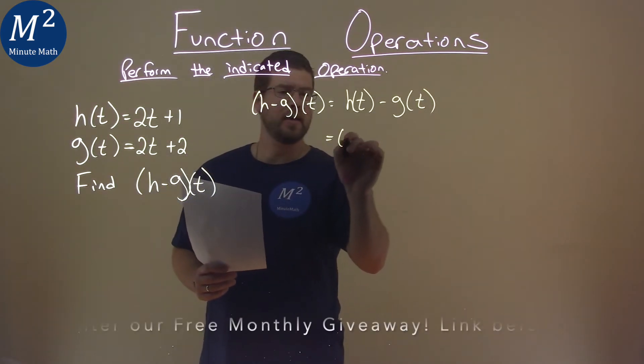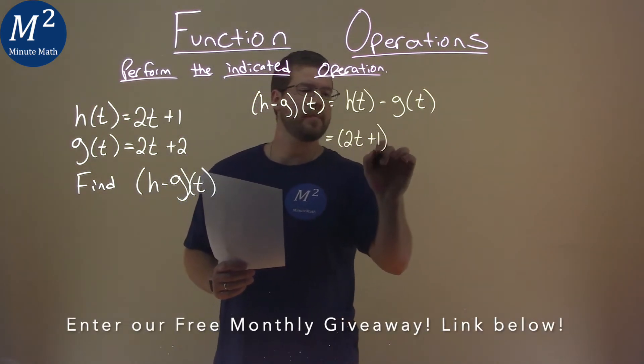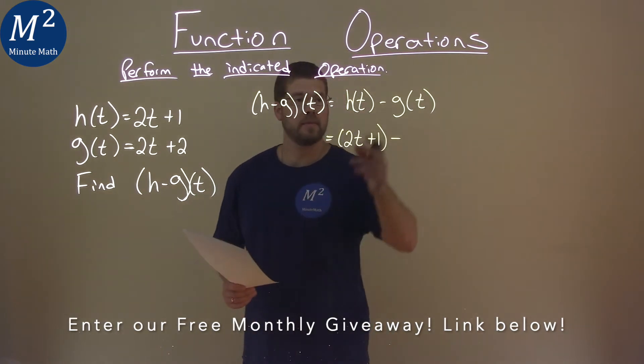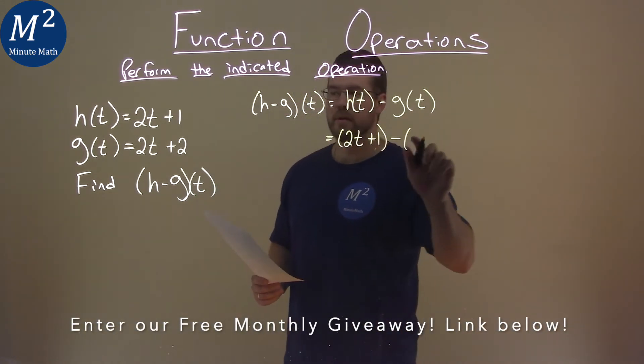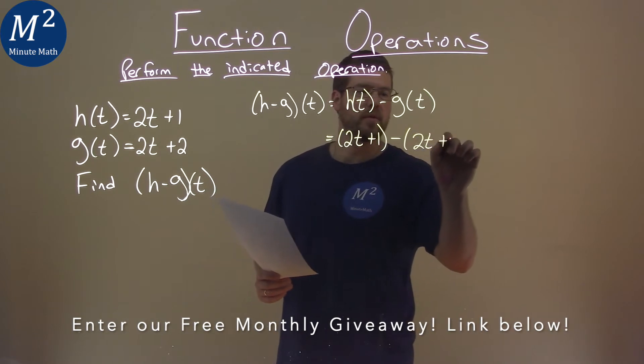h of t is 2t plus 1. We're subtracting that to g of t, which we were given, and notice I'll put it in parentheses, 2t plus 2.